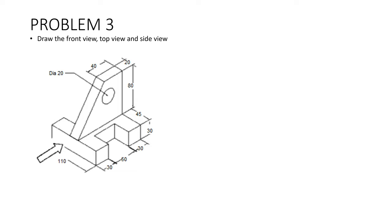Next, we are going to discuss problem number 3. Here we have the front view direction like this. We are going to draw the front view simply. Draw an XY reference line and we can make the rectangular shape. There are only two rectangular shapes — first one and then second one, which is the second rectangle in the middle.